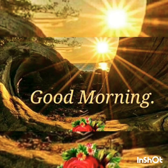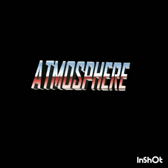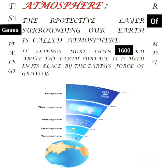Good morning students. Let us study our next chapter of geography: atmosphere. The protective layer of gases surrounding our planet Earth is called the atmosphere. The atmosphere extends more than 1600 kilometers above the Earth's surface and is held in its place by the Earth's force of gravity.